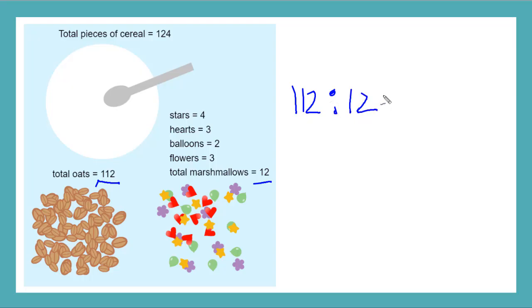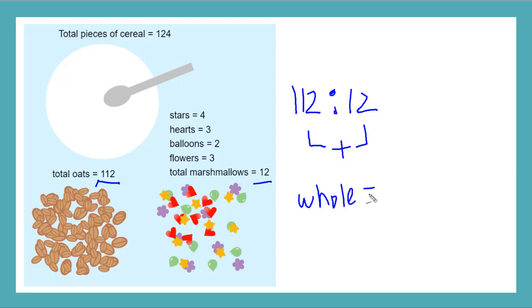And what is the amount of the whole? That would be taking this part and this part and adding them together. So 112 plus 12 — my whole is equal to 124, which works out because my total number of pieces is 124. In this case, I'm using the oats as one part and all of the marshmallows together as another part.